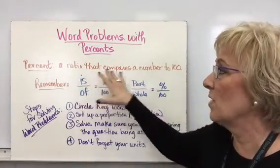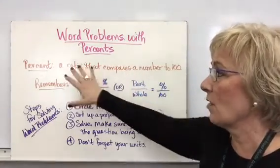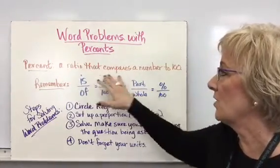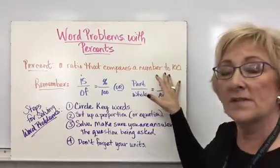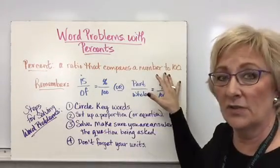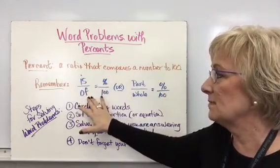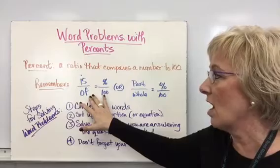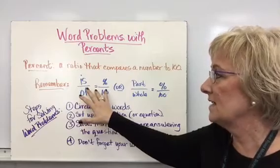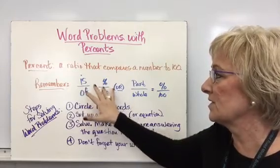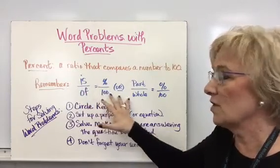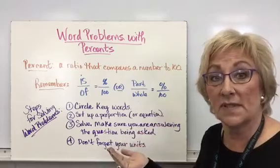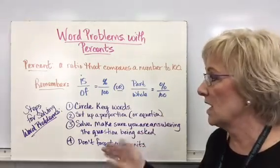Let's just take a review — a percent is a ratio that compares a number out of a hundred. We were setting them up in proportions as: 'is over of' is equal to the percent over a hundred, or think of it as the part over the whole is equal to the percent over a hundred.